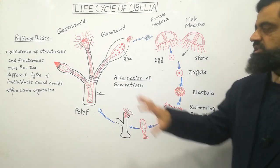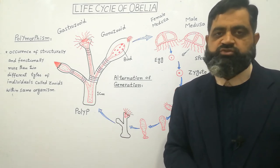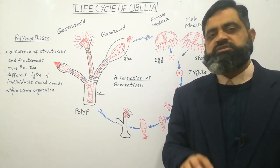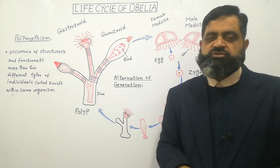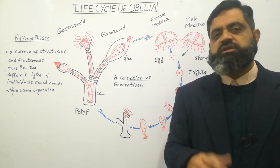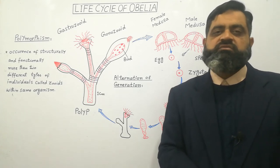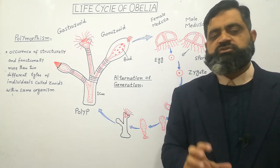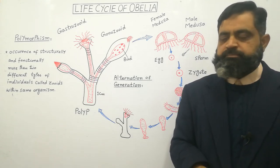In this way, in the same organism there are more than two different body forms, and this phenomenon is known as polymorphism. The best example of polymorphism is Obelia. Another example is Physalia, which is a colonial cnidarian that lives in water, also known as the Portuguese man-of-war.